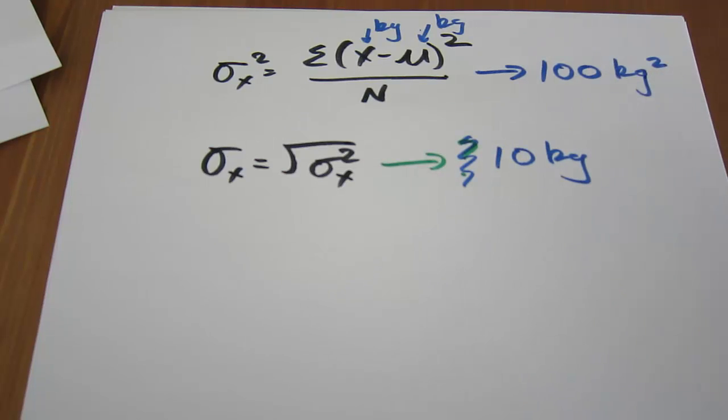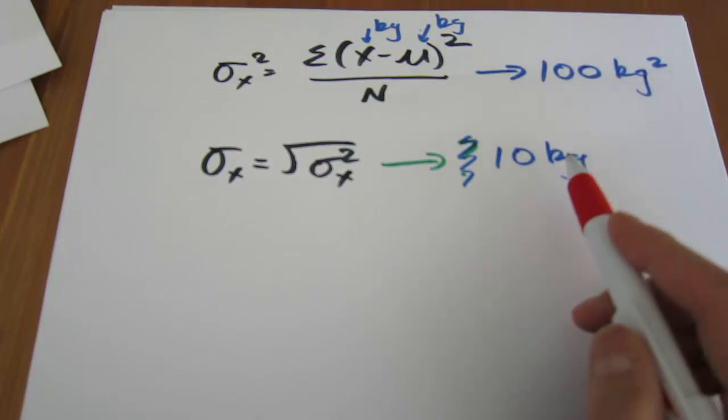And this is the main reason why we take the square root to calculate the standard deviation—it's just so we're using a unit of measure that we're familiar with.